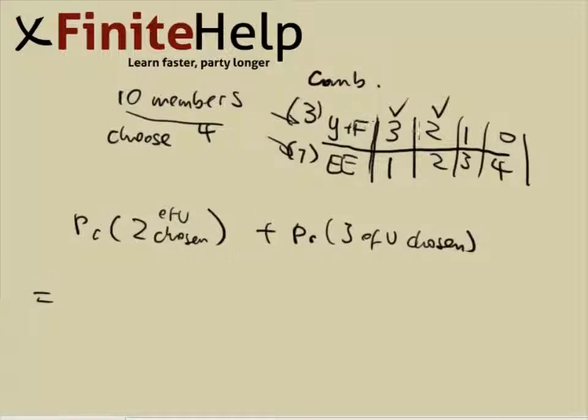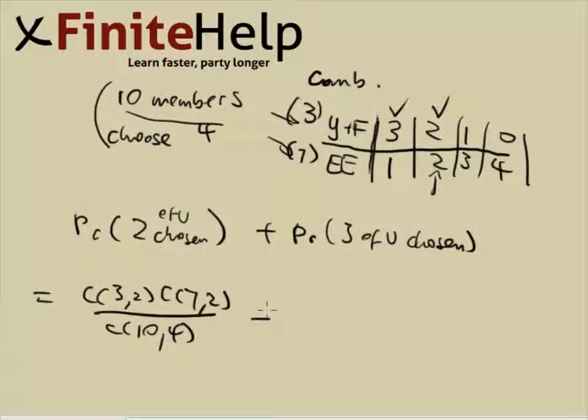The probability of two of you is going to be combination three choose two and then combination seven choose two over the sample space, which is going to be ten choose four. Plus if three of you is chosen, then you get three choose three and seven choose one over again the same thing, ten choose four.